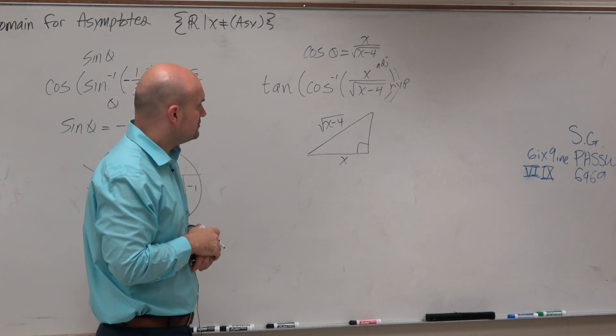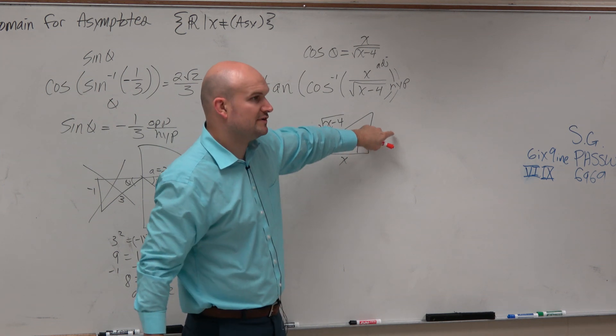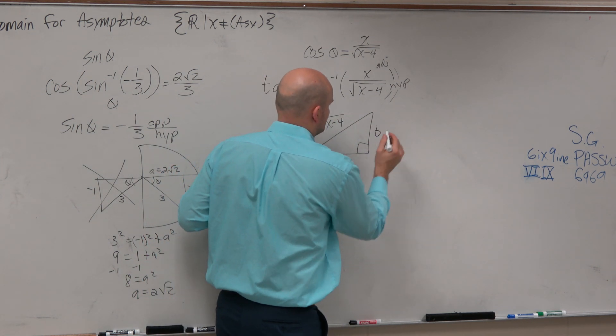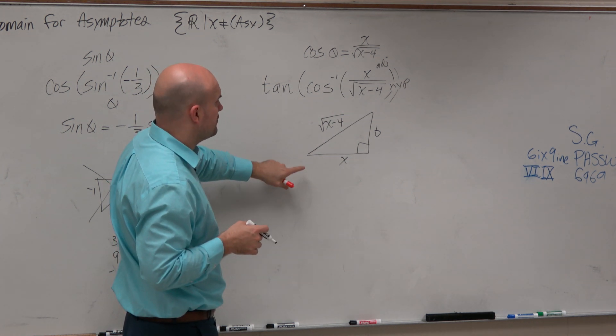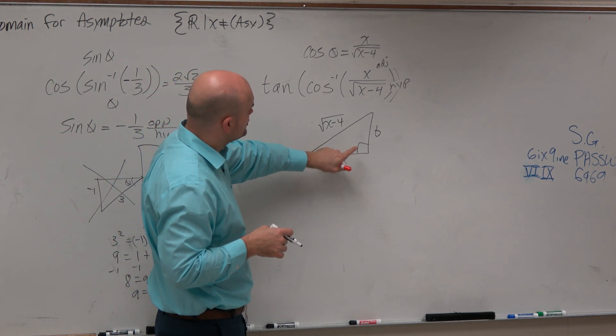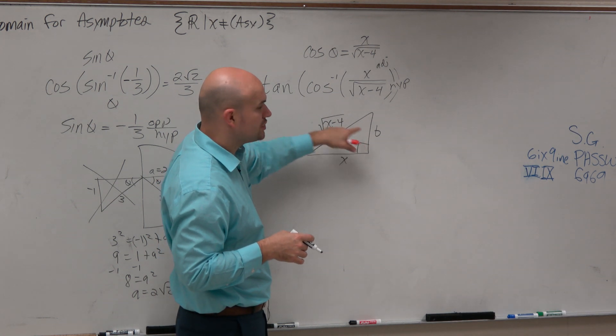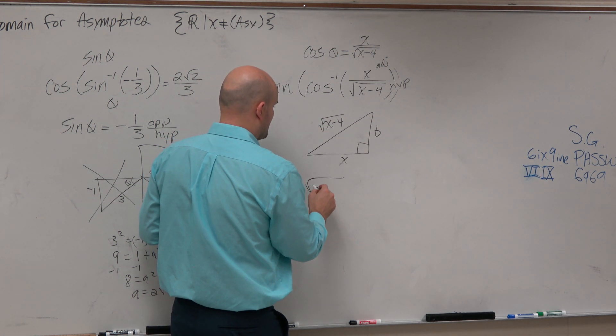All right, so now to find the tangent, we've got to figure out what this is. So let's call this b. So now what we're going to want to do is we're going to want to solve for b in terms of x. So to do that, we're just going to do the Pythagorean theorem.